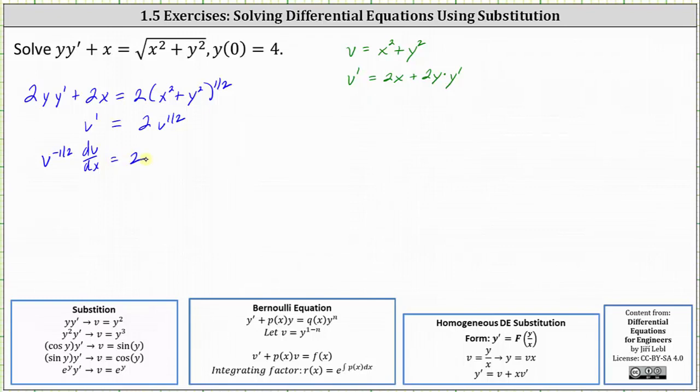Next we will write the differential equation in differential form where I can think of multiplying both sides by dx, which gives us v to the negative one-half dv equals two dx, and now we integrate both sides of the equation.